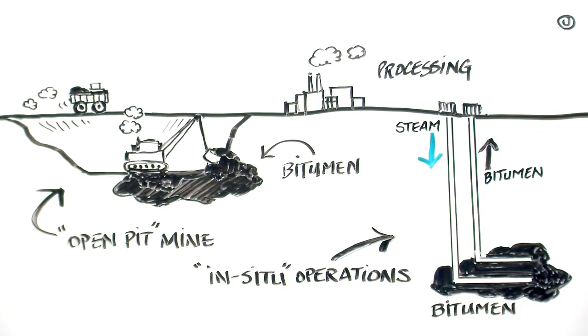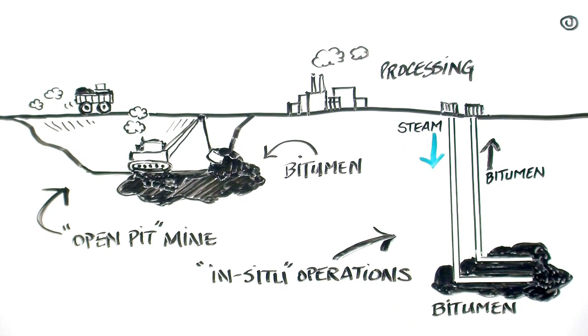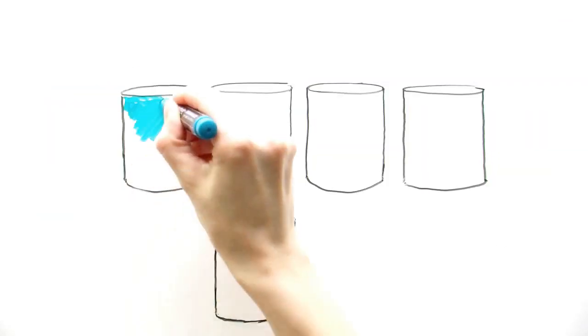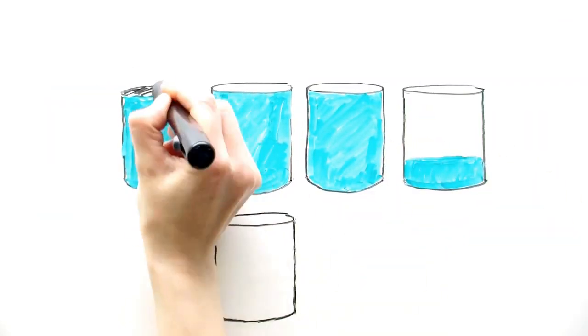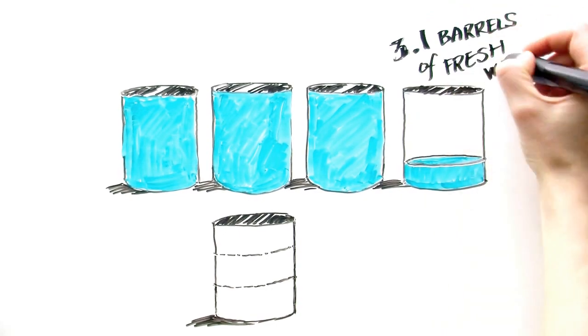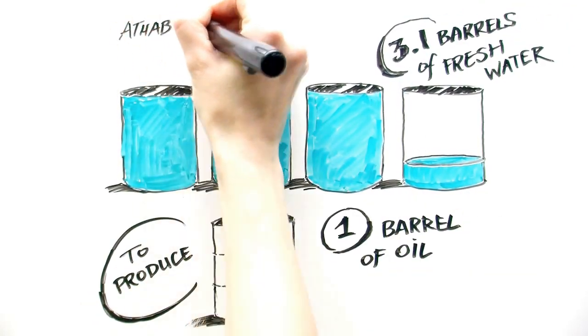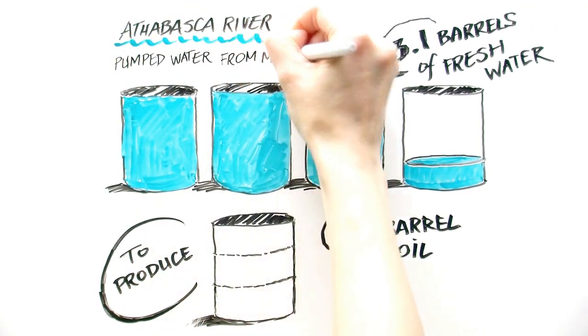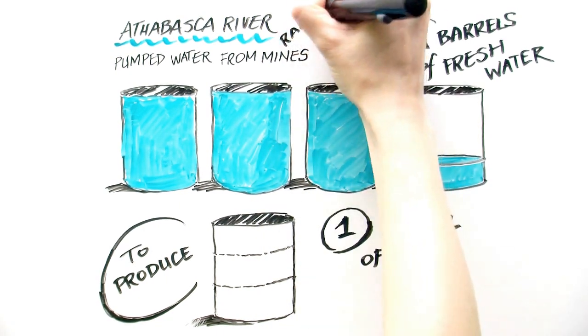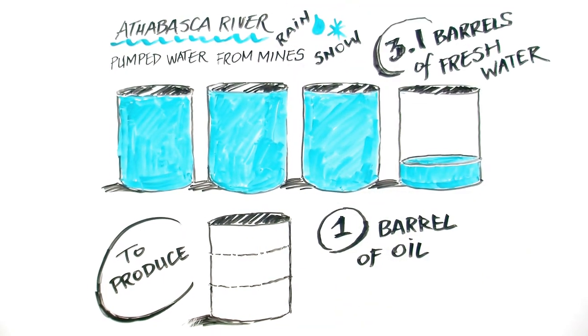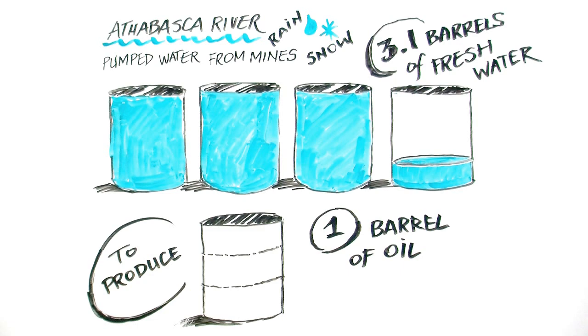Water is used in these operations to help separate the bitumen from the sand, silt, and clay. Mining requires on average 3.1 barrels of fresh water to produce one barrel of oil. Sources of this water include the Athabasca River, rain and snow that is captured in the mine area, and groundwater that is pumped to prevent the mines from filling with water.